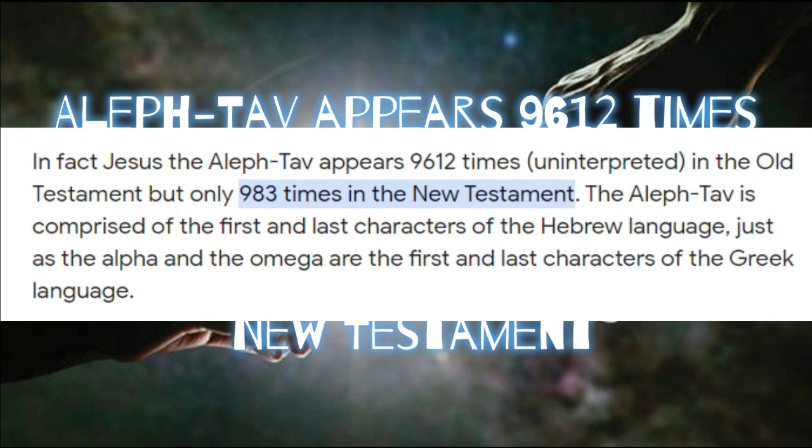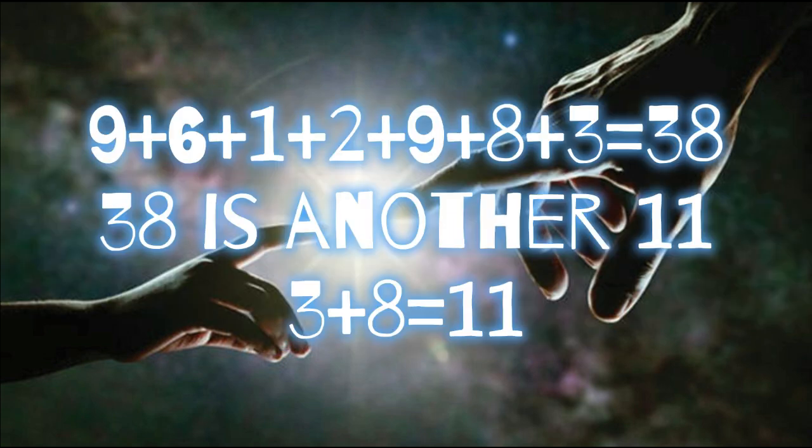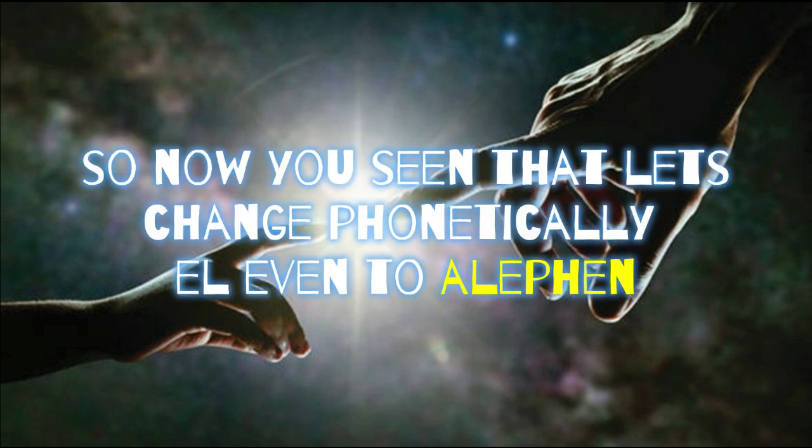So let's add those numbers. Aleph is written in the Bible 9,612 plus 983. As you can see on screen, 9+6+1+2+9+8+3 equals 38. And that 38 is another 11 — 3 plus 8 equals 11. So you're telling me the aleph — the beginning, the end — adds to 11, and that's how many times it appears in the Bible? I was blown away, because this is where you're just going to go 'oh my God.'